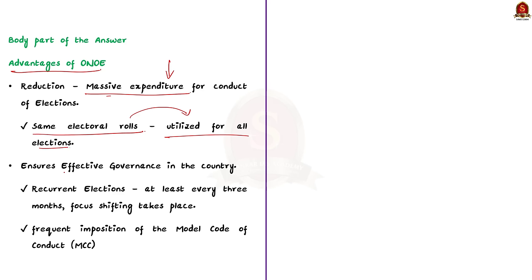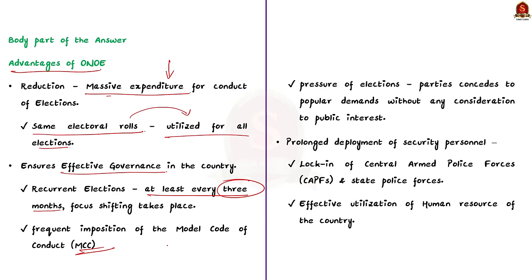Secondly, simultaneous elections ensure effective governance in the country. Currently, elections are recurrent at least every three months, leading to frequent imposition of the Model Code of Conduct, which puts a hold on entire development programs of union and state governments. Under political pressure to win elections, the focus of every leader — from the Prime Minister to local panchayat members — shifts to elections, neglecting governance. Parties often lure voters by promising popular demands like social welfare pensions, loan waivers, free housing, food subsidy, free electricity, etc. These practices will be reduced substantially with simultaneous elections.